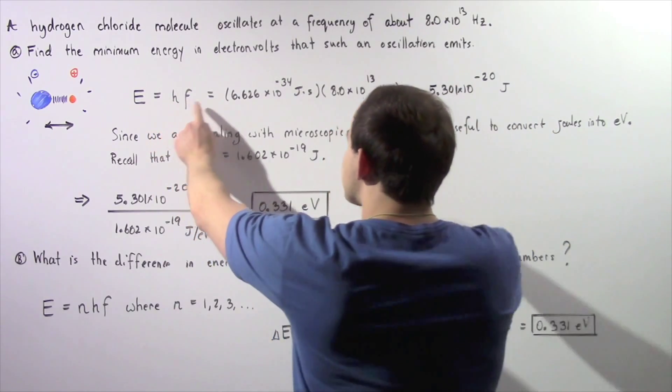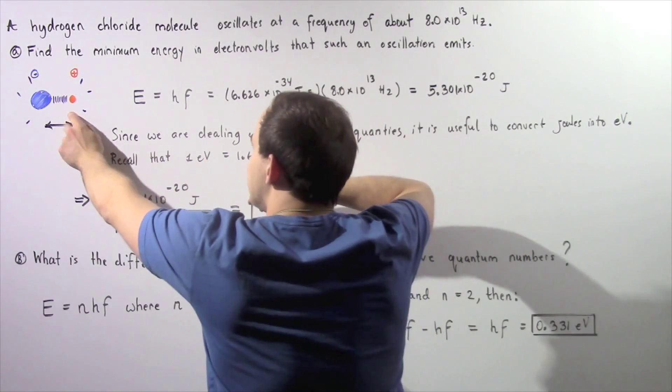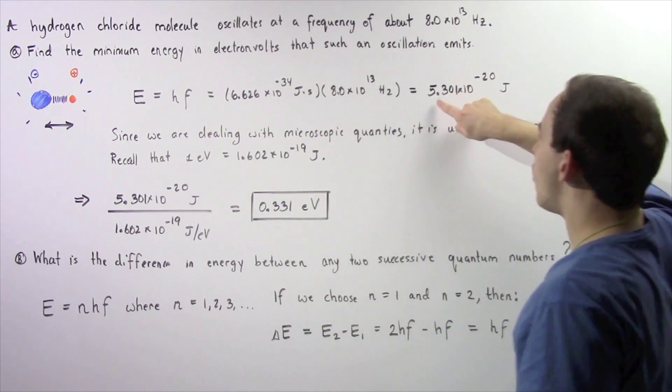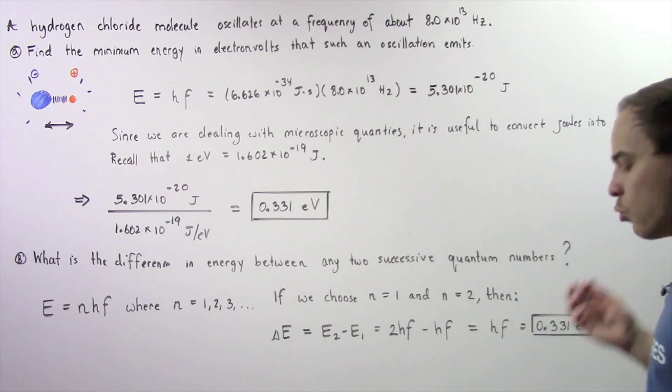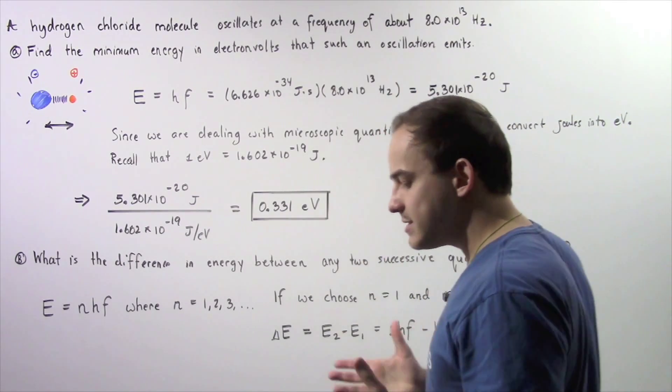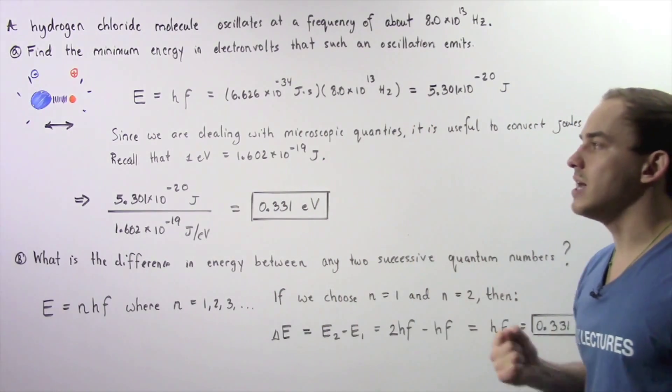So we take Planck's constant and multiply it by the frequency of oscillation of the molecule, and that gives us 5.301 x 10^-20 joules. So this is a very small quantity of energy, but it represents the minimum quantity of energy.